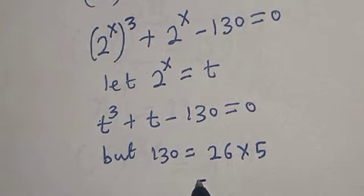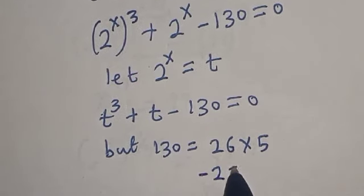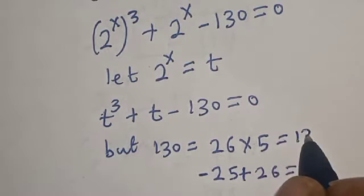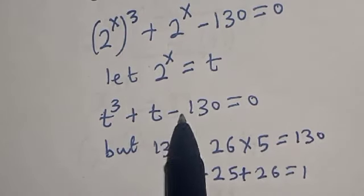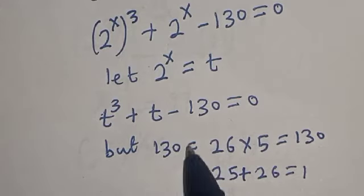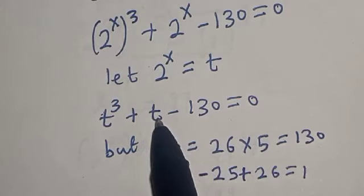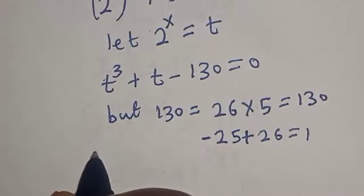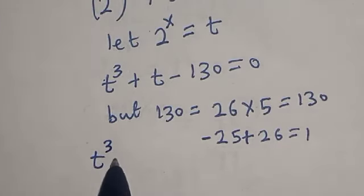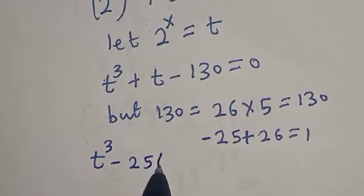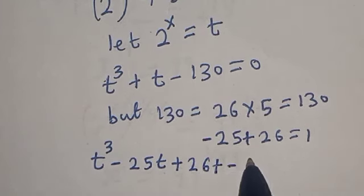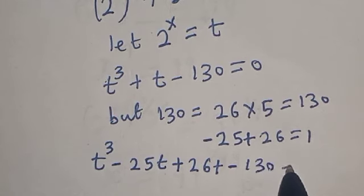We perform a trick here: minus 25 plus 26 equals 1, and 26 times 5 gives us 130, which matches our product. The coefficient of t is 1 and the constant is 130. So substituting, we have t to the power of 3 minus 25t plus 26t minus 130 is equal to 0.